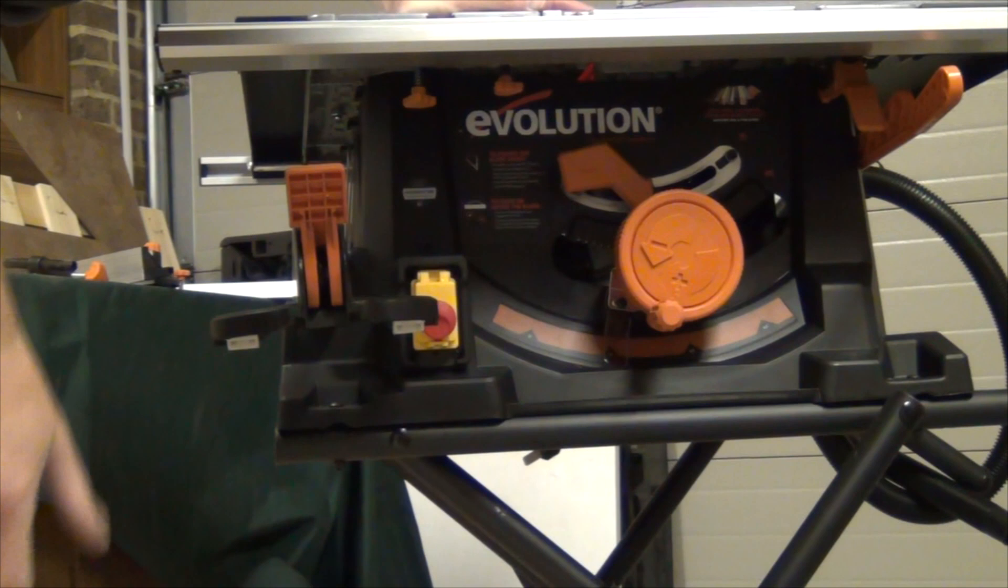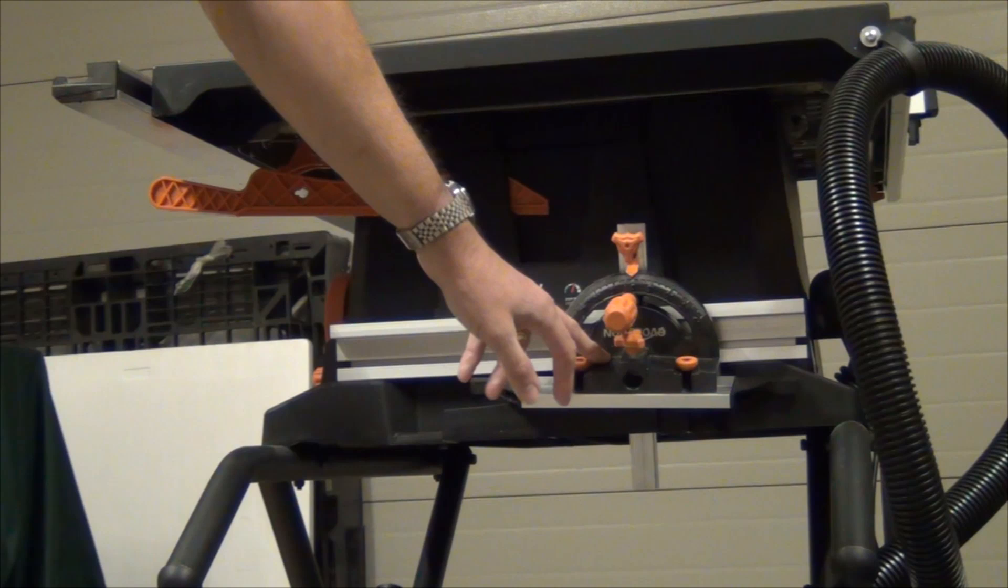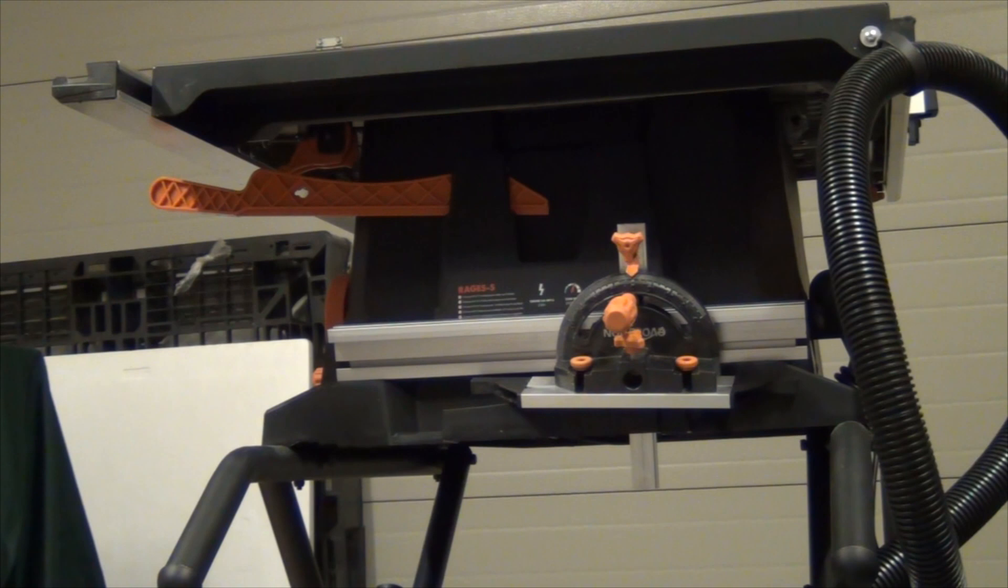There are storage positions for things like the rip fence, maintenance spanners, the mains cord, mitre fence, the low fence attachment and a push stick. And they will come with it.